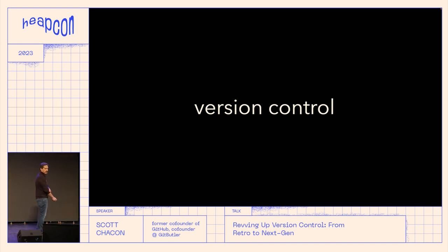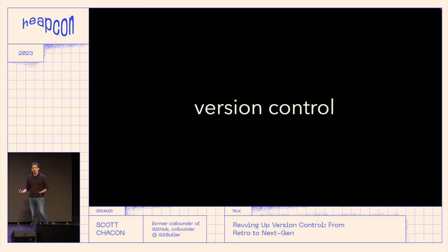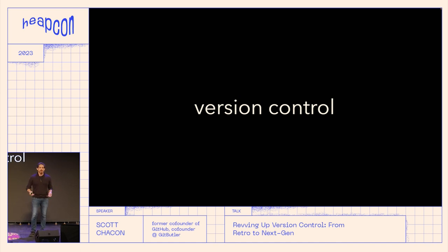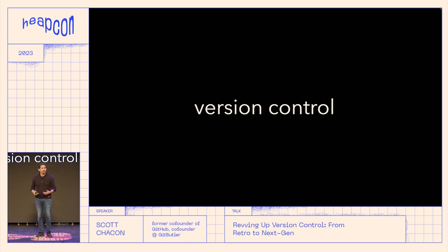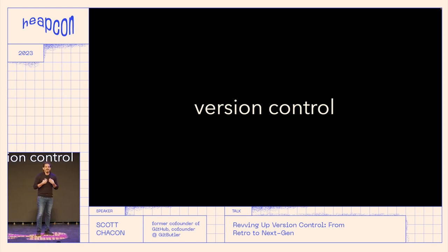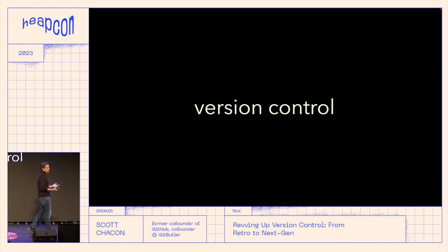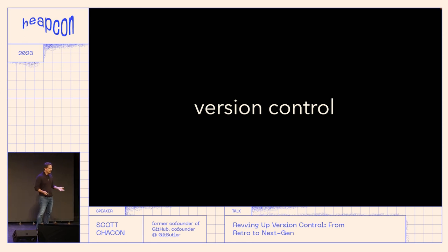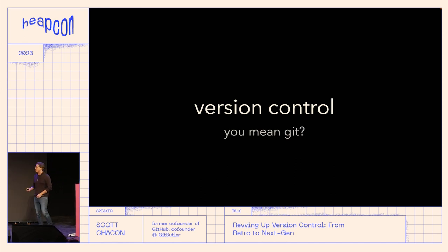I think you can do this with just about anything. But also because we're all using version control — it is a major part of all of our software development workflows. No matter what languages or products we work on, we all write code and thus all use version control. So what are we accepting as givens with our version control tools, and is that the best way of doing things?